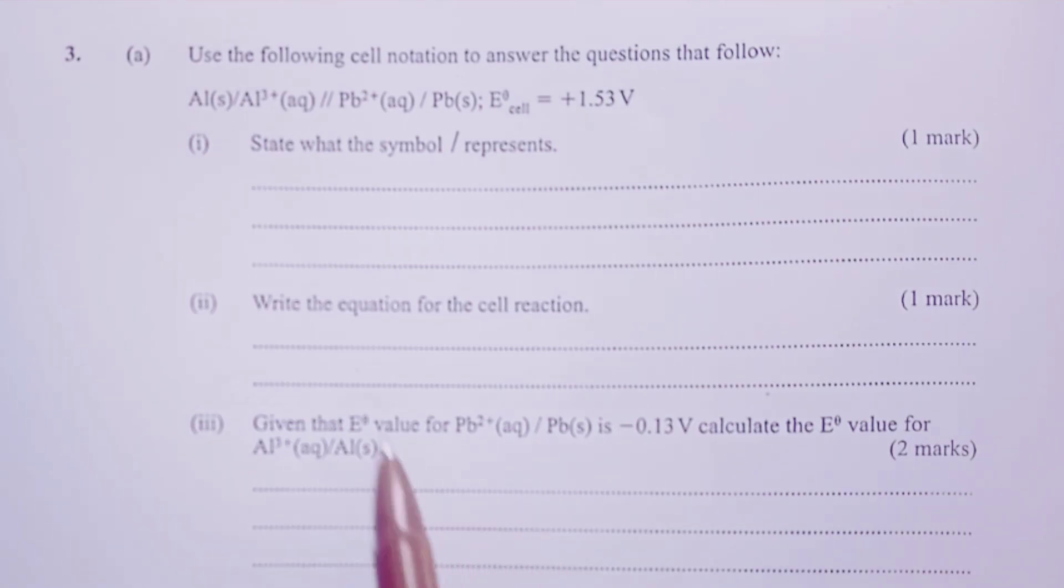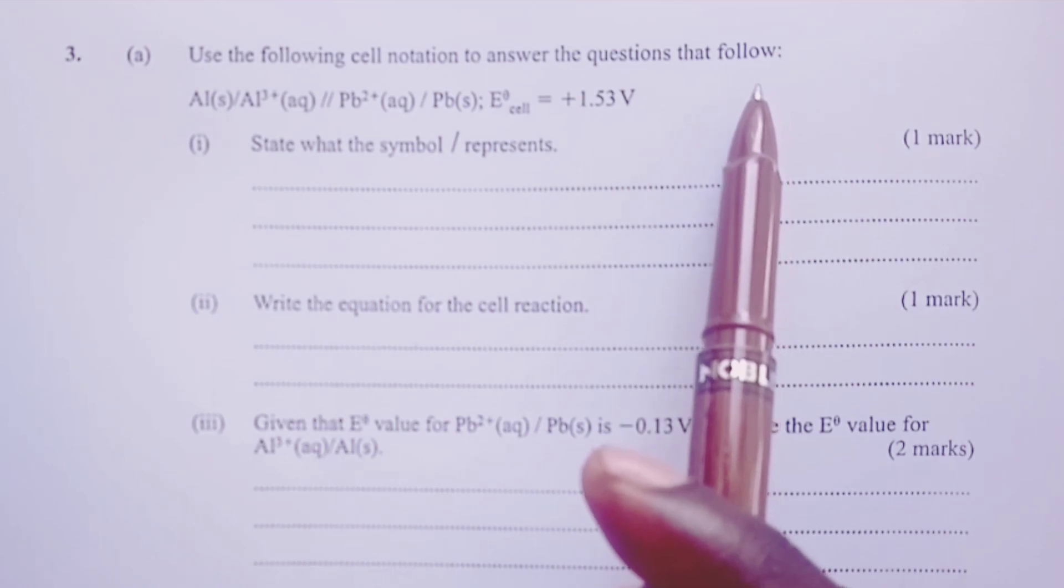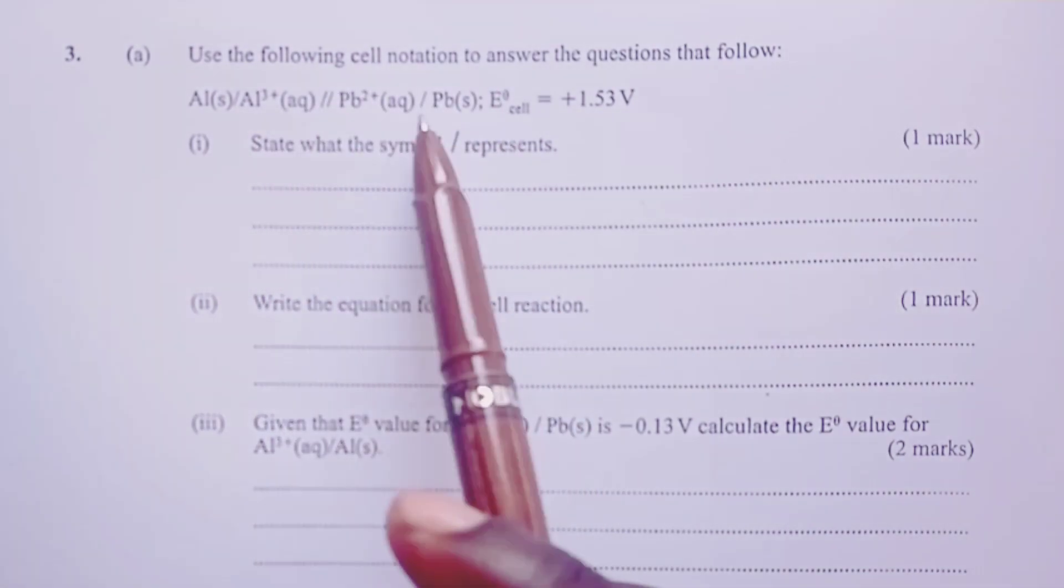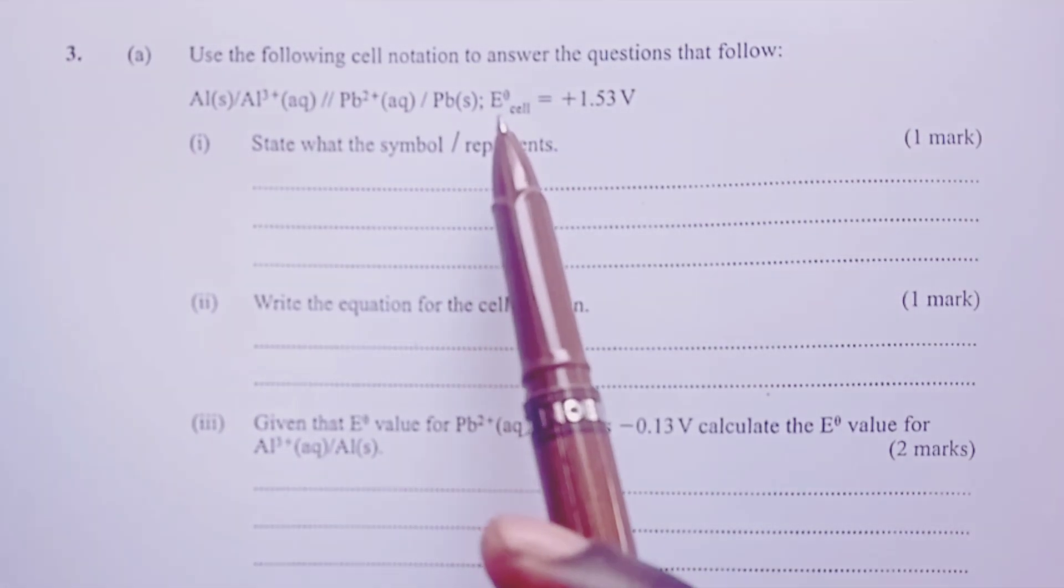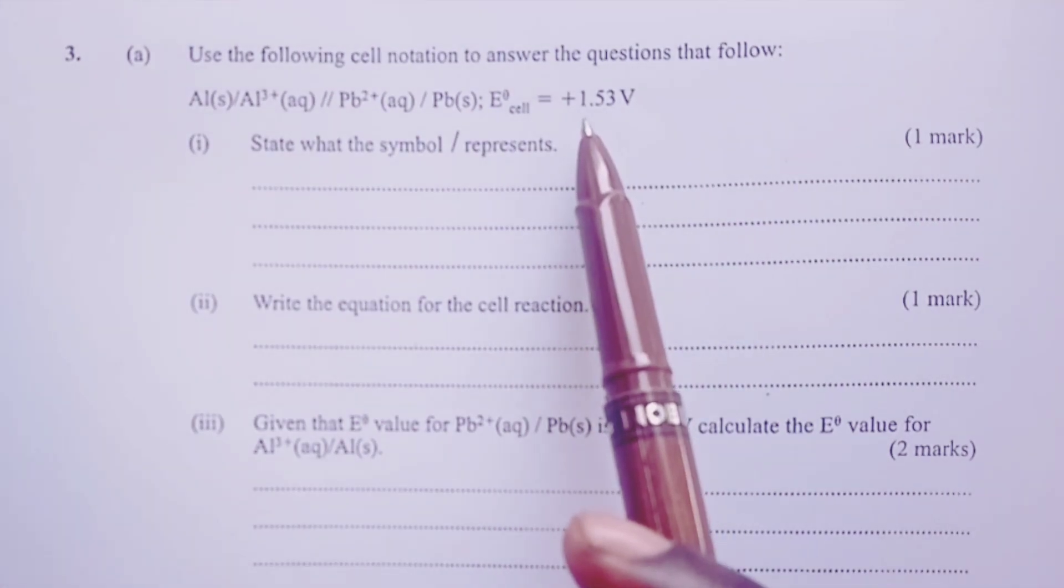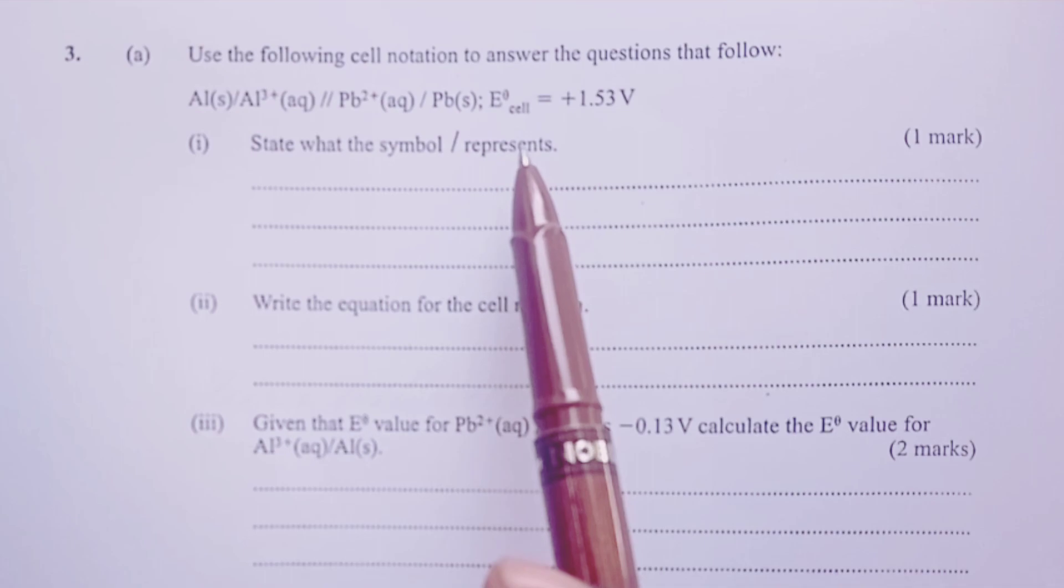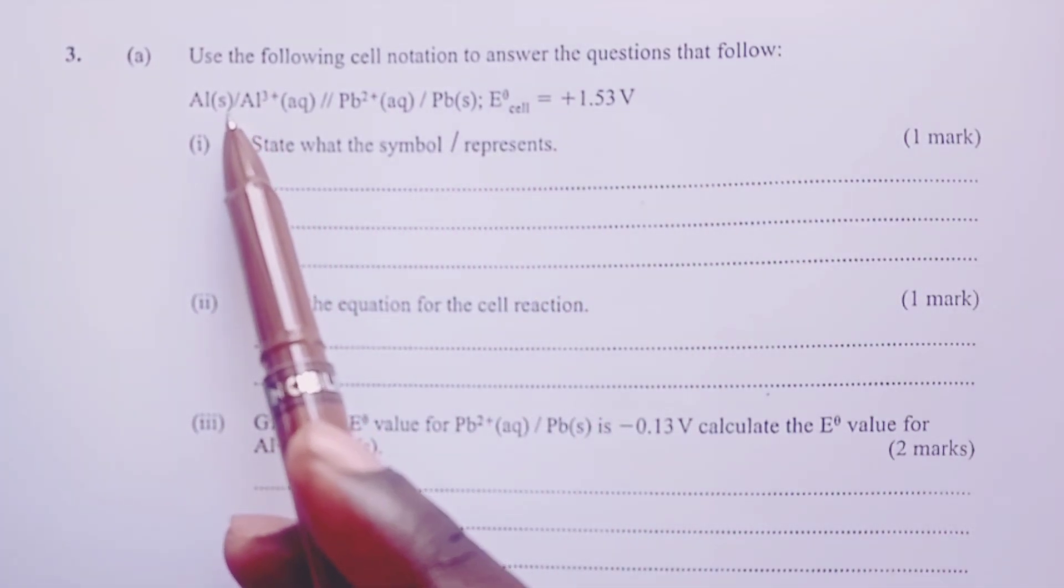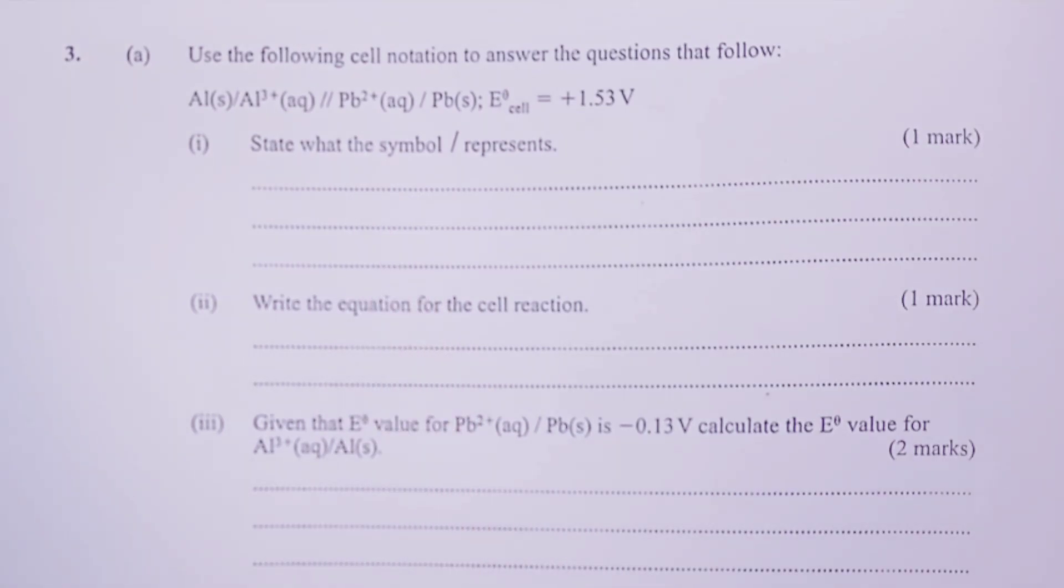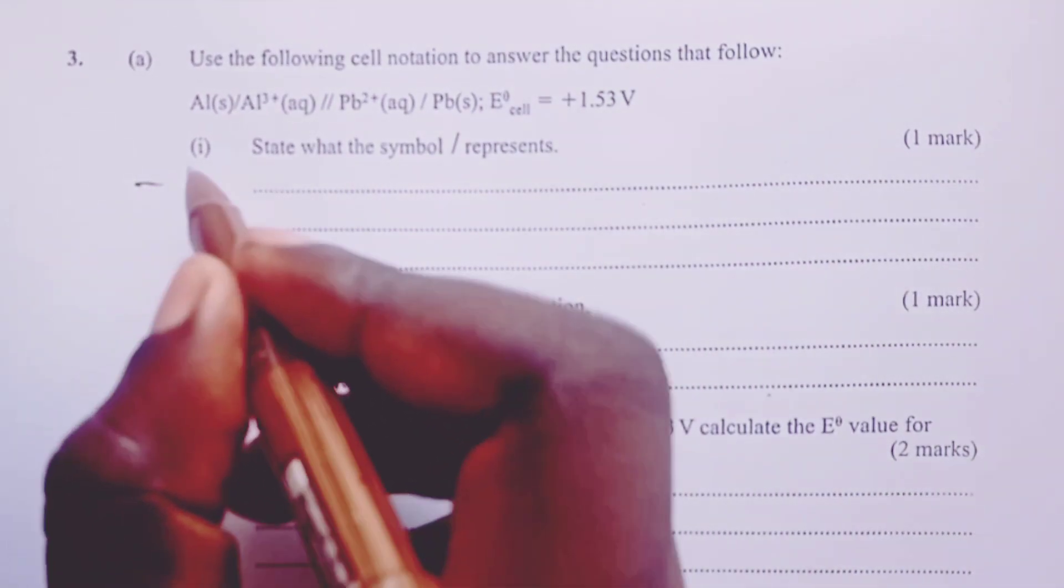Question three part A. Use the following cell notation to answer the questions that follow. So we have aluminum half cell on the left connected to lead half cell on the right and the electromotive force E° for the cell being given as positive 1.53 volts. Part one state what the symbol forward stroke represents for each half cell. So we have it here and we also have it here. So this forward stroke that appears in half cells actually represents what we call the phase boundary.